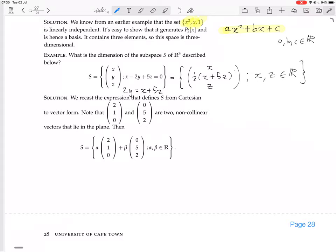Those two sets are definitely equal to each other. Now, I want to try and get to these vectors (2,1,0) and (0,5,2), so I can split up this thing, and we could have x times (1, 1/2, 0), plus z times (0, 5/2, 1), where x and z are real numbers.